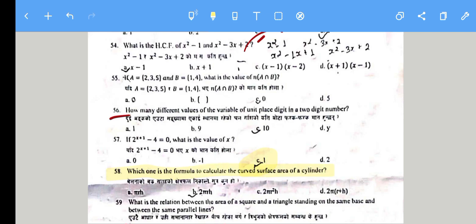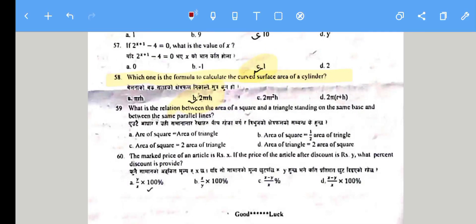Question 58: Which formula calculates curved surface area? 2πr is the correct answer. Question 59: What is the relation between the area of a square and triangle standing on the same base? The area of the square is double the area of the triangle, so C is correct.